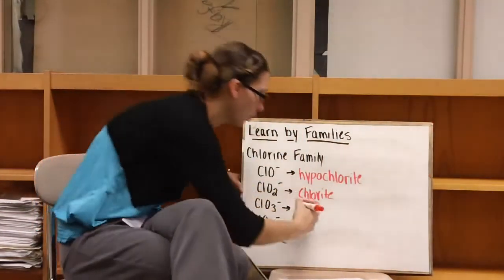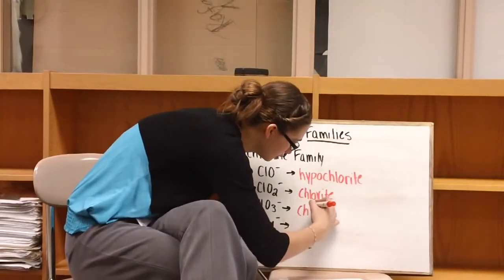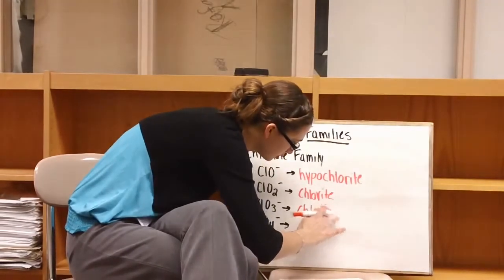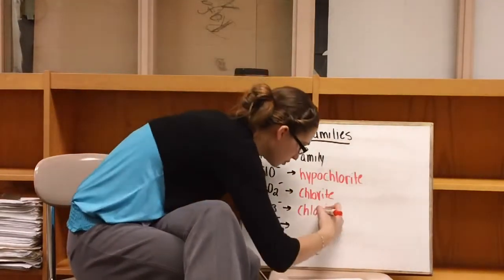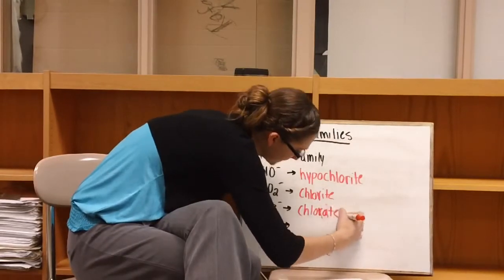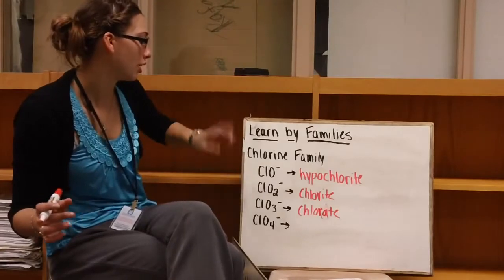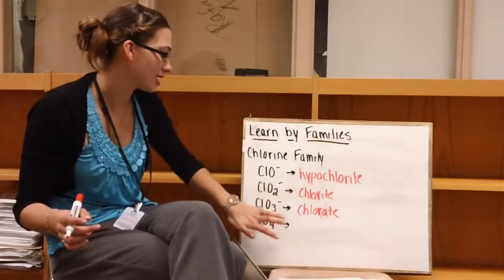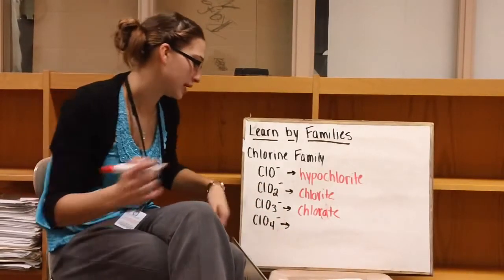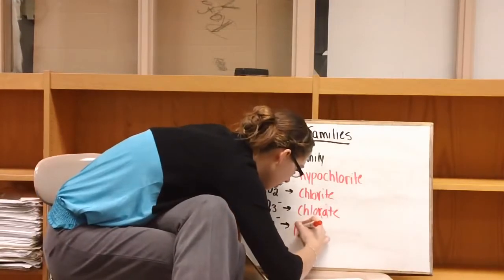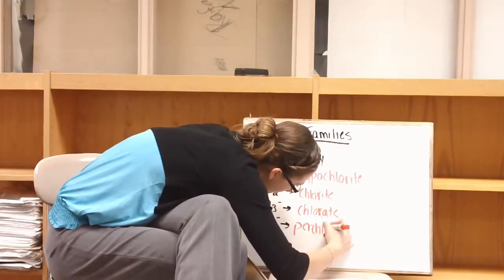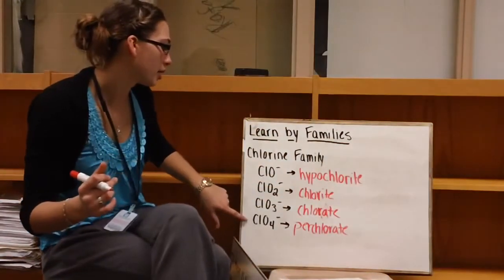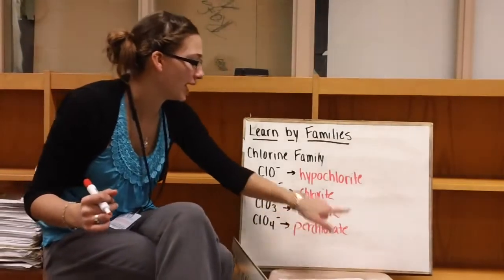ClO2- is chlorite. ClO3- is chlorate. So if you go back to the rule we learned earlier, chlorite has two oxygens, chlorate has three oxygens. And then ClO4- is perchlorate, meaning that there's one more oxygen than there was in the normal -ate ending.